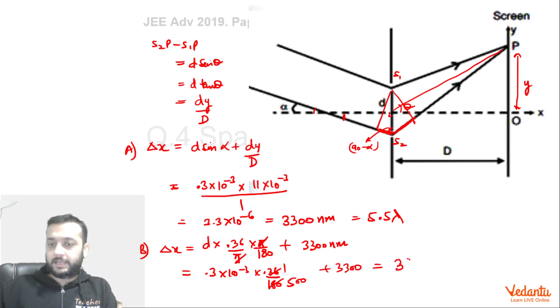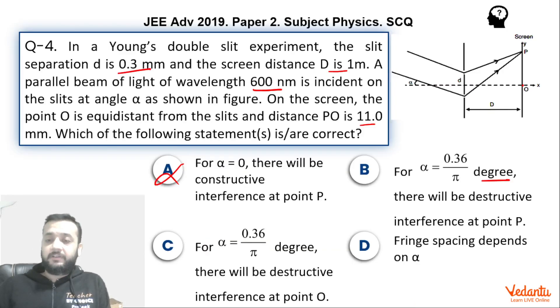So this will become 3900 nanometers, which is nothing but 6.5 lambda. So you can see it is 6.5 lambda. So we can say that again, it will be a destructive interference. And they are saying destructive interference and hence it is right.